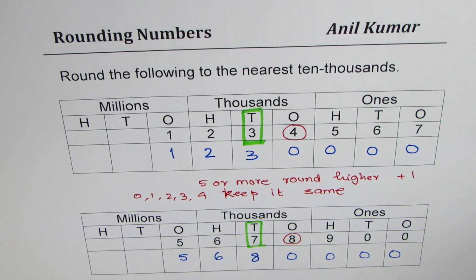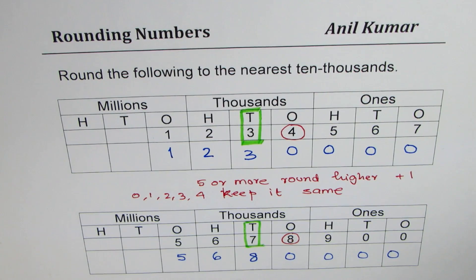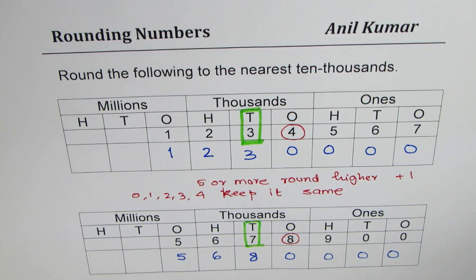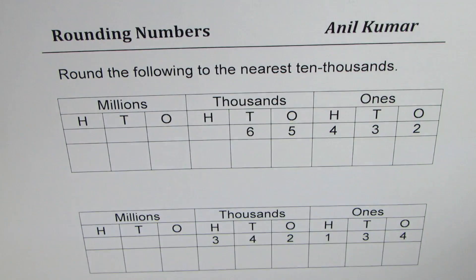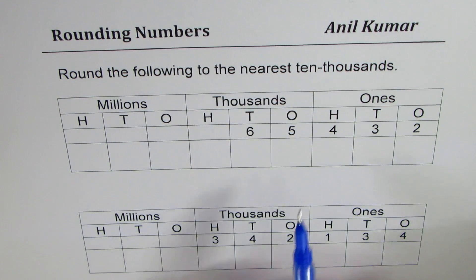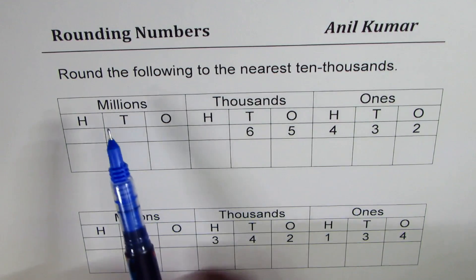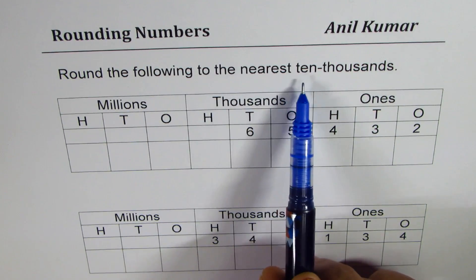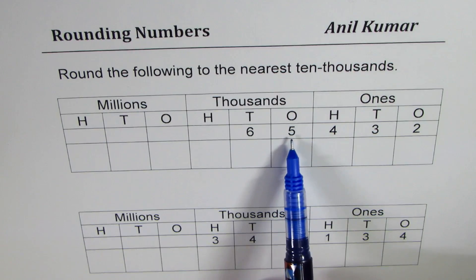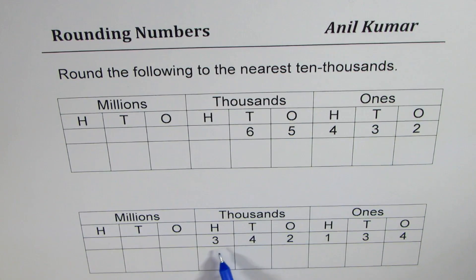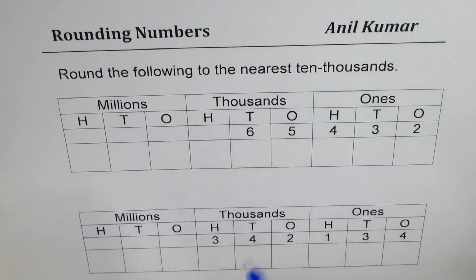All right. So that is the process which we are going to follow. Here are a few practice questions for you. Let's try to do these ones. So I have taken a bit smaller numbers. We have to round the following numbers to nearest ten thousand. So it is 65,432. The next number is 342,134. You can pause the video, round these numbers to the nearest ten thousand and check with my answer.